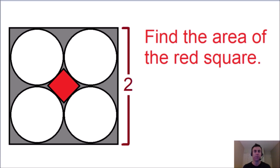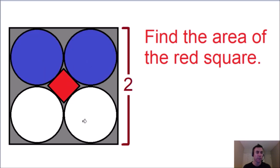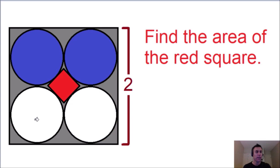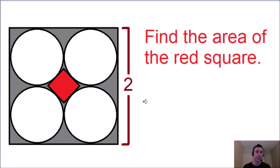Here in this problem, we need to find the area of the red square. Notice how we have a red square in the middle that's shaded, that we're trying to find the area of. And we have four circles that are inscribed inside of a bigger square. The big square has a side length of two.